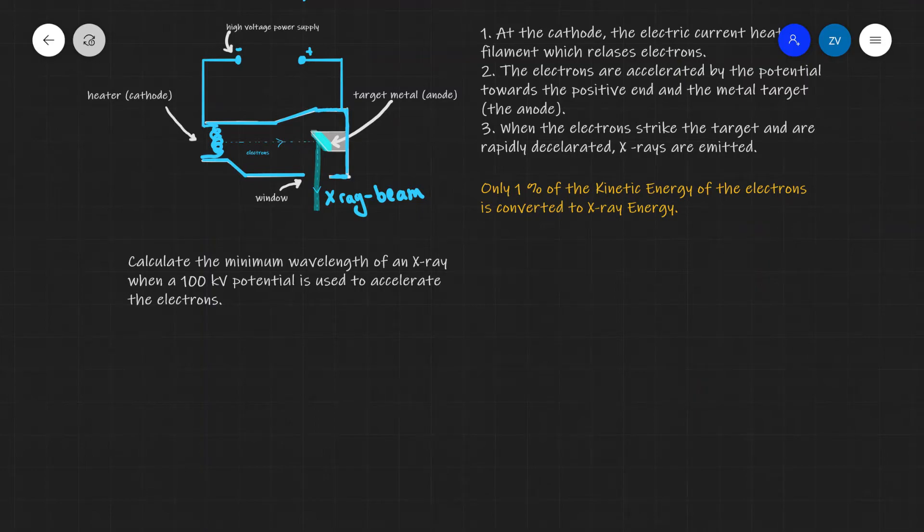So guys, let's apply what we have just learned to a little problem. Let's calculate the minimum wavelength of an x-ray when a 100,000 volts or 100 kilovolt potential is used to accelerate the electrons. Now, if an electron produces an x-ray and about 1% of the total will do, the electron is going to have a lot of electrical energy. So the electron energy in this case, the electrons energy is going to get converted to photon energy.